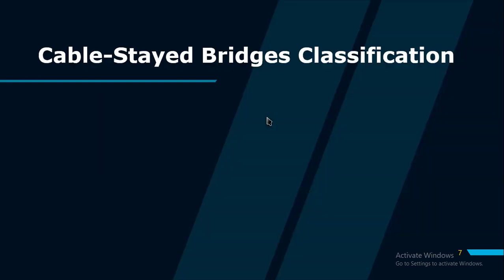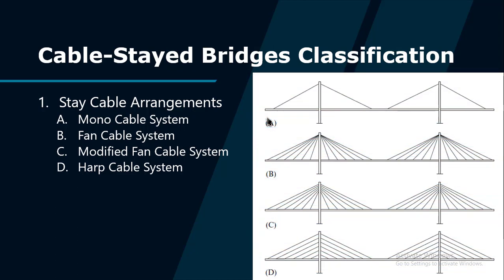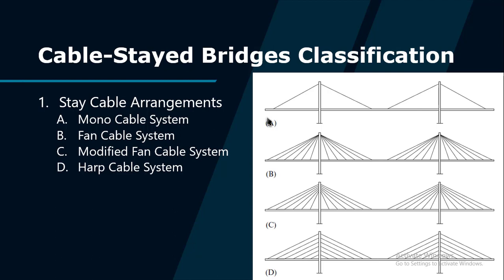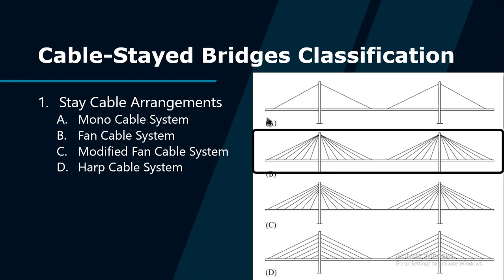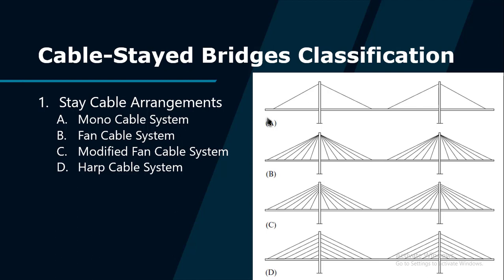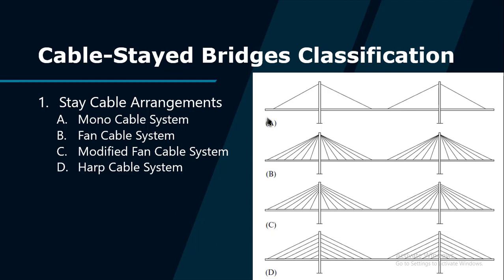Cable-stayed bridges can be classified based on three considerations. The first is stay cable arrangements. According to the longitudinal cable layout, they are classified into four types: mono cable system, which uses a single cable from the towers and is rarely built; fan cable system, where all stay cables connect to or pass over the top of the towers; modified fan cable system, developed to avoid difficulties in fixation of cable stays at the tower top; and harp cable system, where the cables are nearly parallel to each other, with their fixed points on the tower proportional to their distance from the tower on the deck.